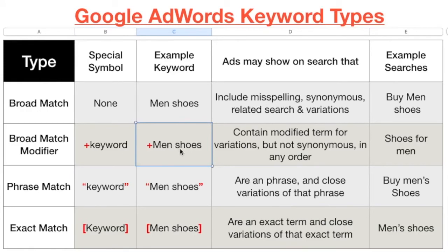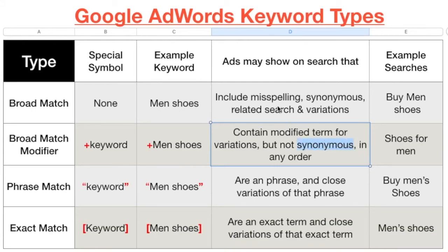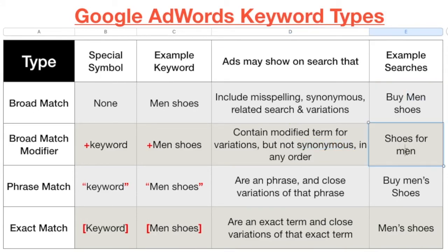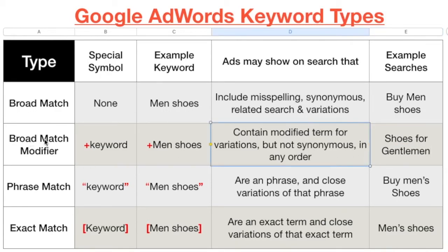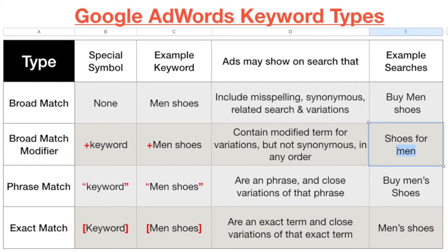Suppose your keyword is 'man shoes' and you add it as broad match modifier with a plus sign. You're telling Google that synonyms should not appear. In regular broad match, if someone writes 'gentleman,' your ad shows. But with broad match modifier, synonyms are not allowed - searching 'gentleman shoes' will not trigger your ad.